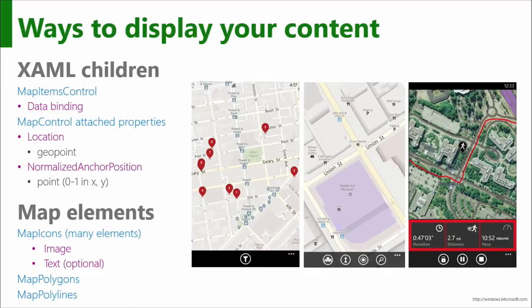Effectively you say: I want you to draw this Map Items Control at this particular latitude and longitude, and then it positions it exactly in the right place on the map. It also has this idea of a normalized anchor position. If you look at those red balloons in that graphic, each of them would be a Map Items Control. The point at the bottom of that balloon icon is pointing at exactly the right position.